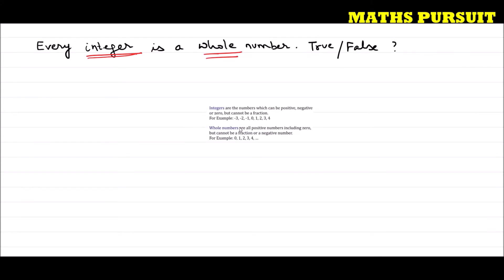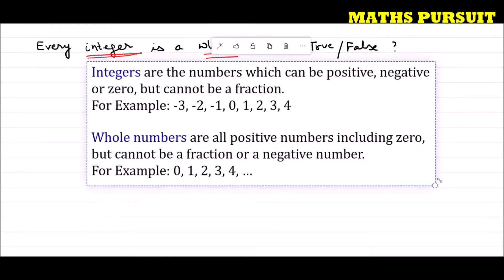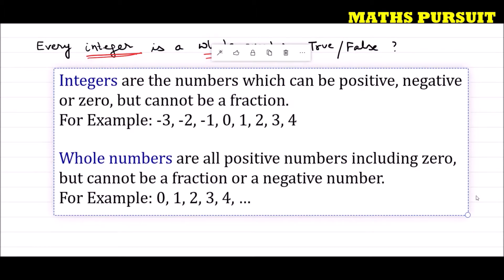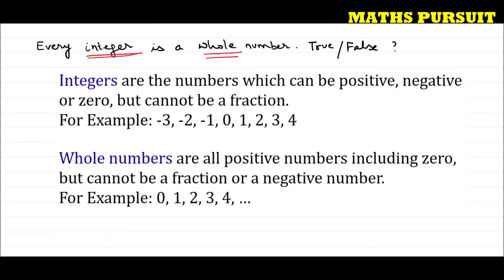On the screen I have posted the definition of integer as well as whole number. The definition of integers says that integers are numbers which can be positive, negative, or zero, but cannot be a fraction. So integers are all numbers — positive, negative, and zero — but they do not include fractions.